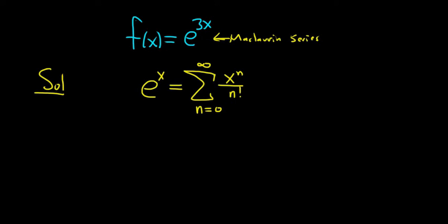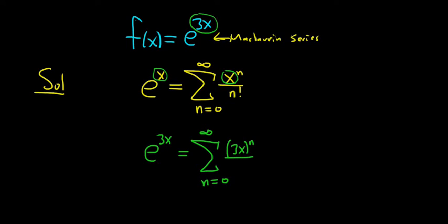The next thing you do is you just replace all of your x's with 3x, right? So we have e to the 3x, and that's equal to the infinite sum as n runs from 0 to infinity. And then instead of x to the n, you have 3x to the n. And then on the bottom, you have the n factorial. So really, really simple.